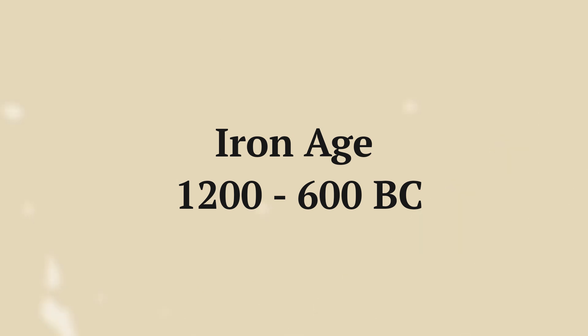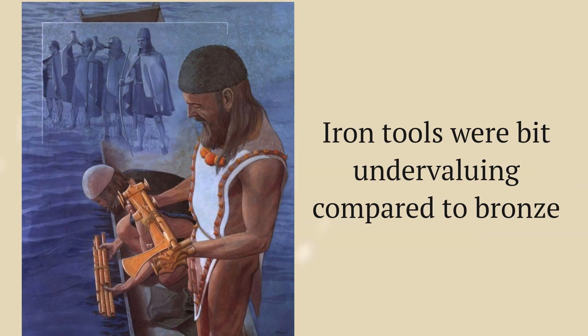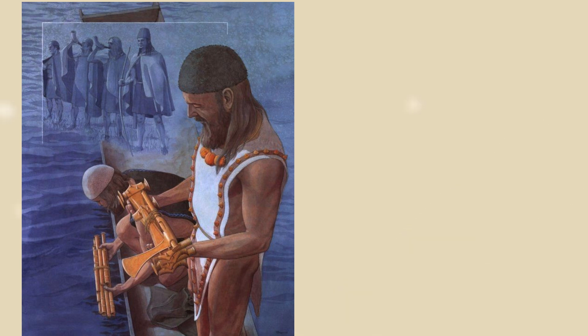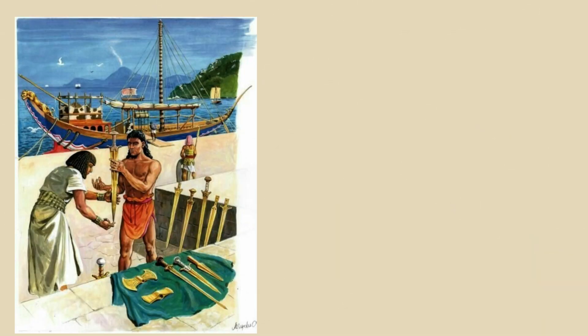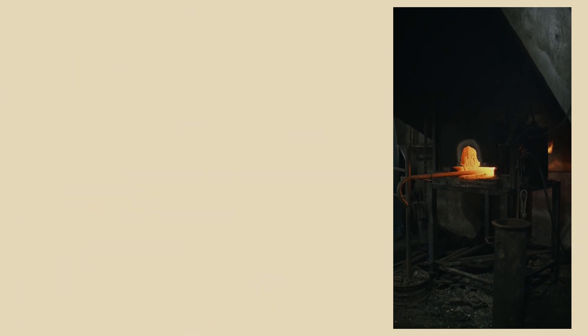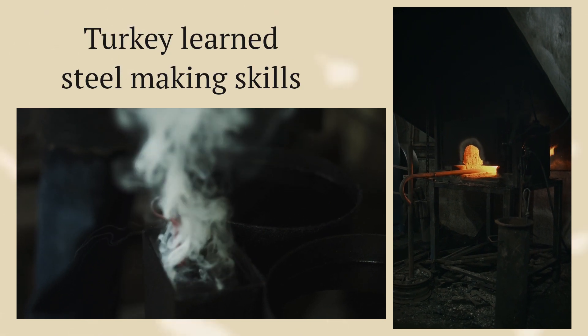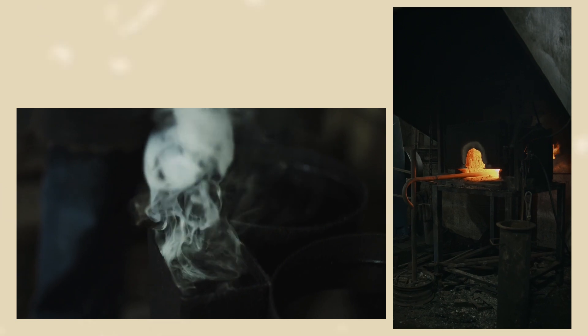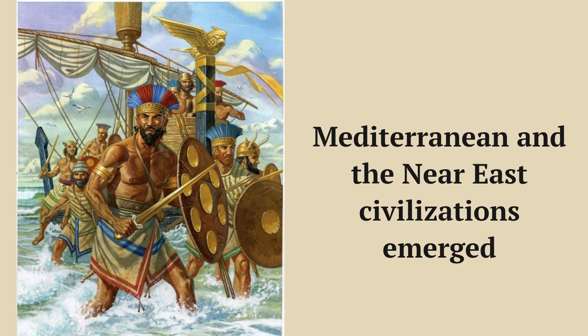The Iron Age marked a pivotal moment in human history when people traded in their bronze for iron. At first, iron tools were underwhelming compared to bronze — not as strong. But the plot twist came when someone had the genius idea of heating iron with carbon to create something extraordinary: steel. The Hittites, in what is now Turkey, might have discovered this steel-making secret. And so, the Iron Age emerged around 1200 BC, giving rise to epic civilizations.